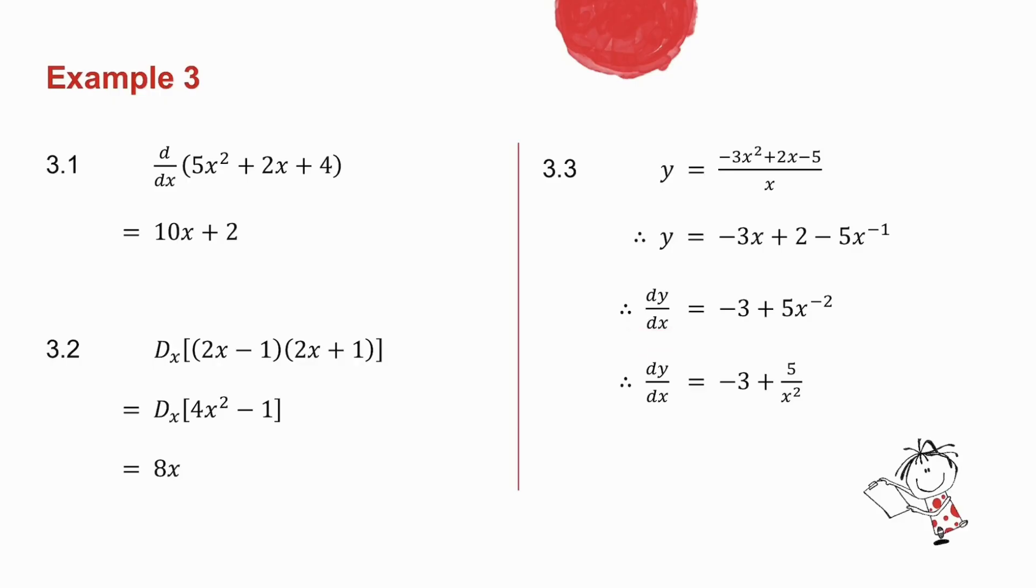So the notation I use for this is I give the derivative as dy by dx. So it is the derivative of y with respect to x. In other words, the derivative of y where x is the variable. So if I take the derivative, derivative of minus 3x is minus 3. Derivative of plus 2 is 0. Derivative of minus 5x to the minus 1 is plus 5x to the minus 2.